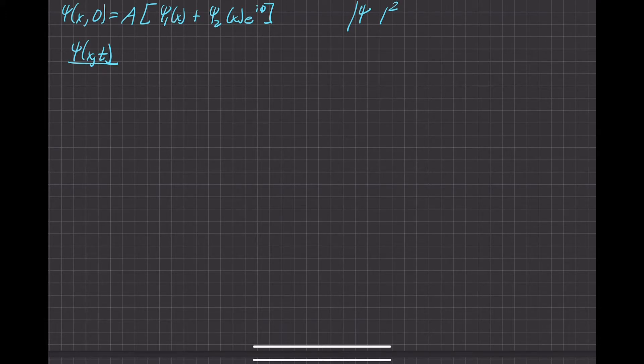But whenever you have some sort of phase like this added to it, it's just going to go away because you're going to do the complex conjugate of everything in the absolute value sign. And then that phase ends up canceling out whenever you find any physically significant value.